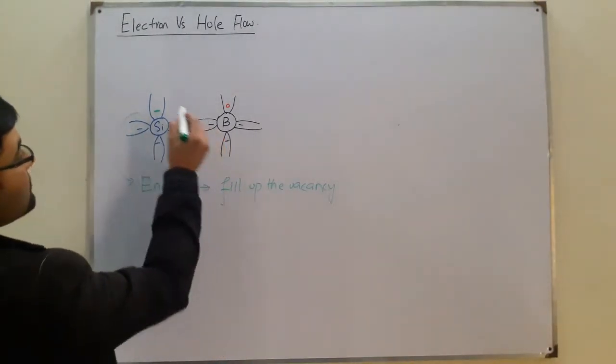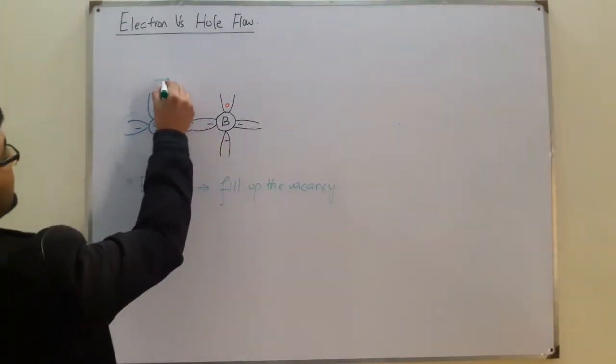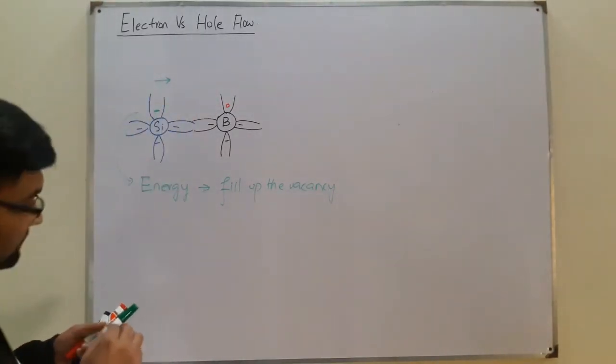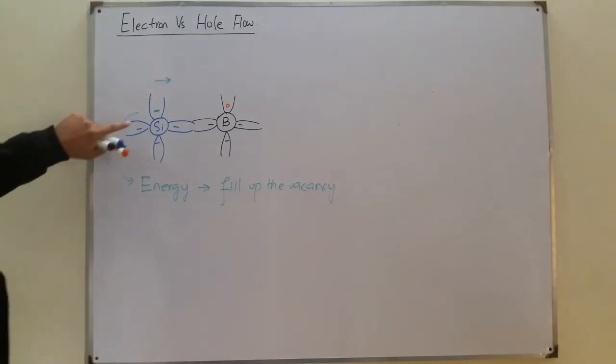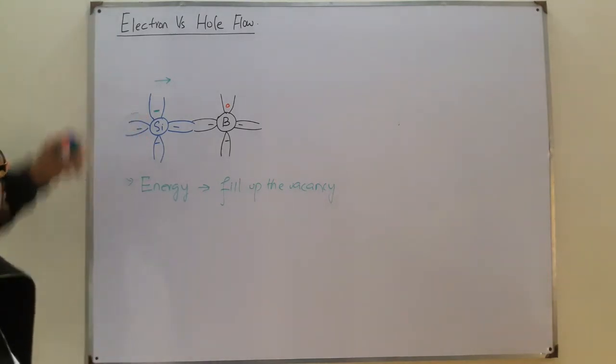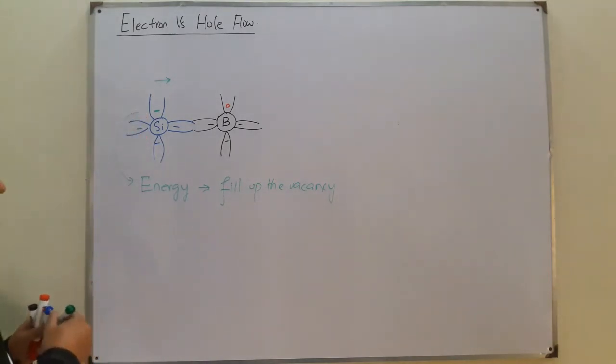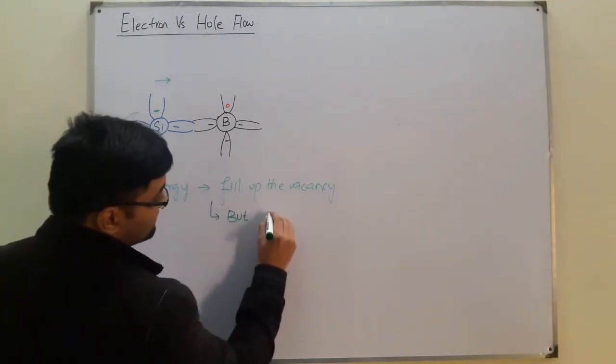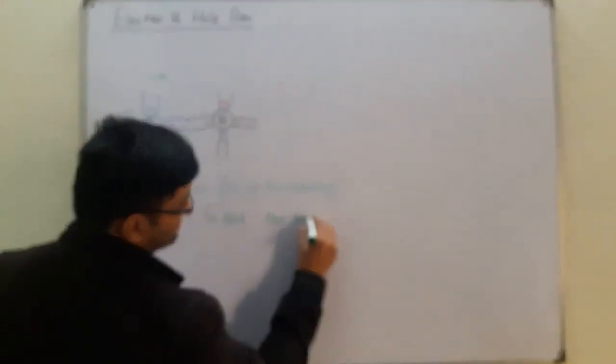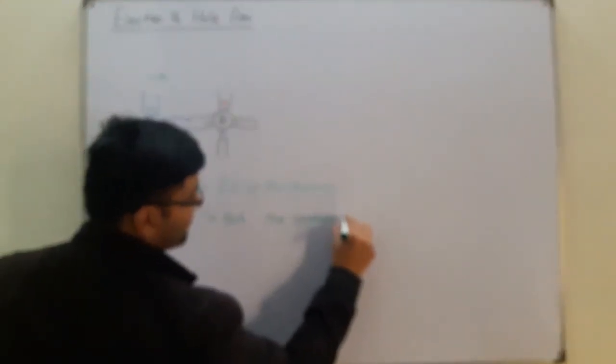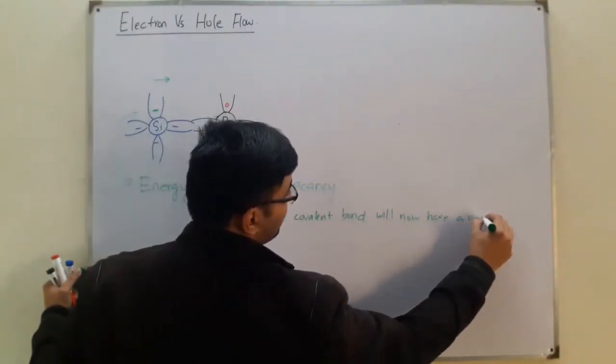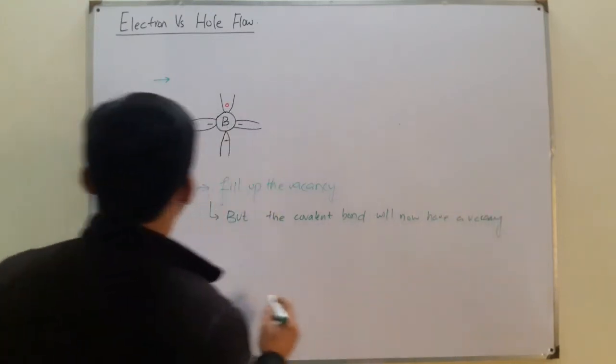Which means it will move toward the right direction. This will move to the right, and now this covalent bond will now have a vacancy. We will fill up the vacancy, but what will happen? The covalent bond will now have a vacancy.